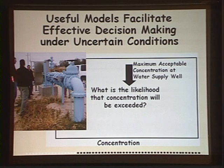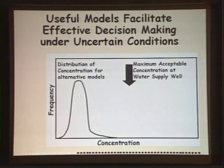Take for example a water supply well with some maximum level of concentration that's acceptable. Our question is, what's the likelihood that we're going to exceed that concentration? If we could take all the data available and think of all the possible ways that could be interpreted and represented, with enough computing power, we could calculate the expected concentration at the pumping well for all those cases and come up with a distribution.